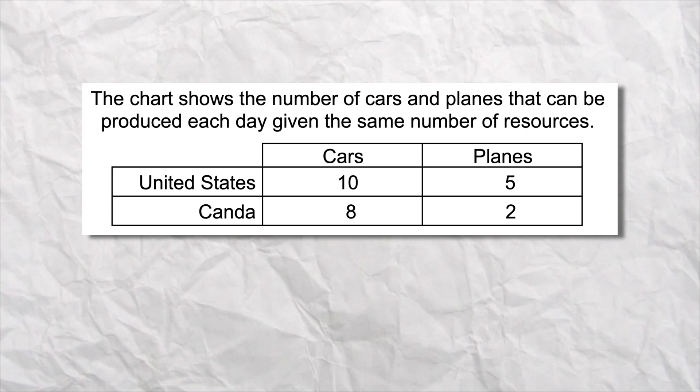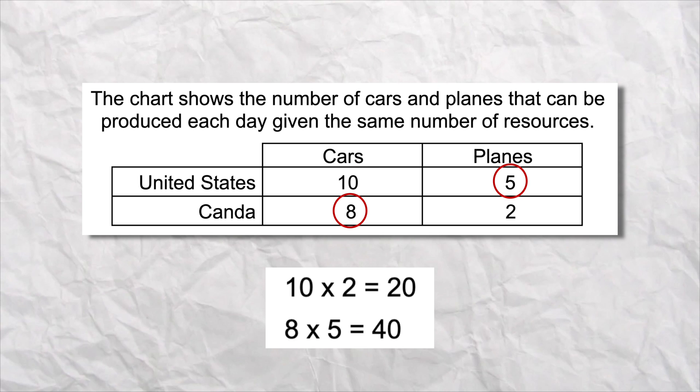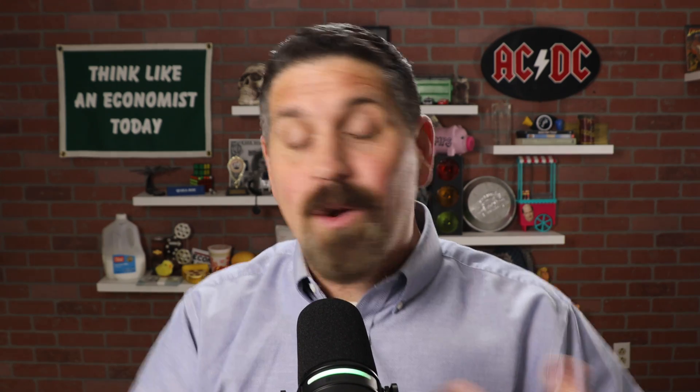When your teacher or professor gives you one of these questions and asks you to identify comparative advantage, just multiply 10 times 2 — that gives you 20 — or 8 times 5 — that gives you 40. Pick the higher number; that tells you who has the comparative advantage. So Canada should specialize in producing cars and the U.S. should specialize in producing planes. It's dirty — you don't have to calculate opportunity costs or do anything else. All you have to do is multiply and it gives you the right answer every single time.